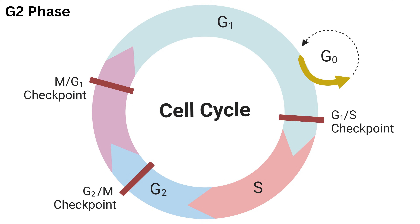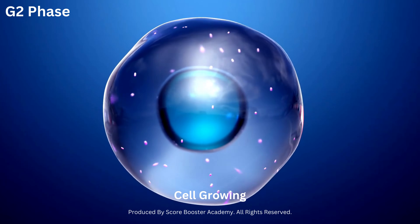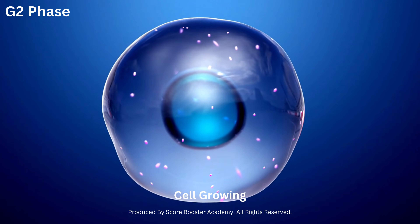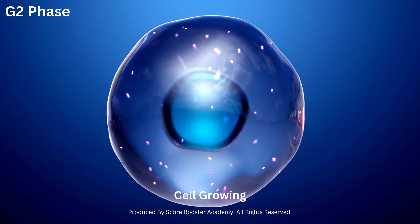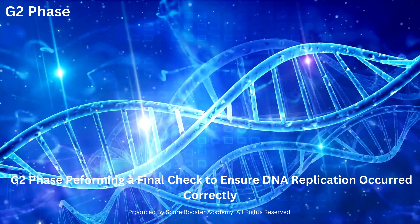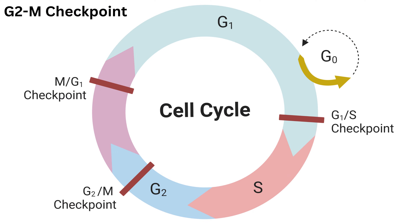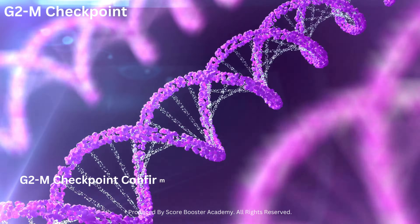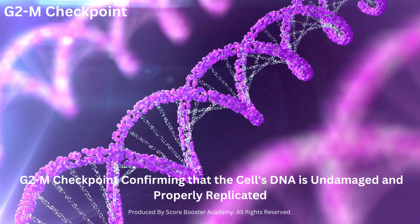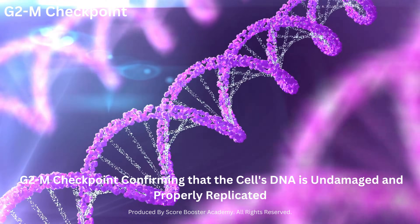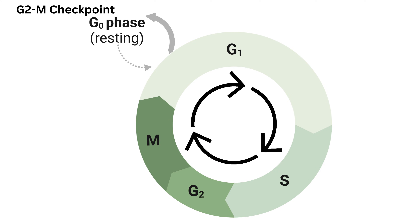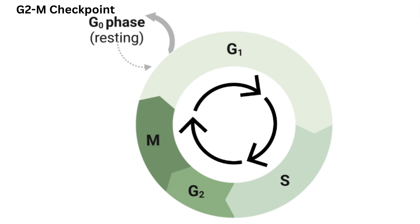During the G2 phase, the cell continues to grow and synthesizes proteins and organelles required for cell division. It performs a final check to ensure DNA replication occurred correctly. The G2/M checkpoint confirms that the cell's DNA is undamaged and properly replicated before entering the mitotic phase. If abnormalities are detected, the cell cycle may pause or trigger repair processes.